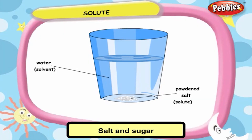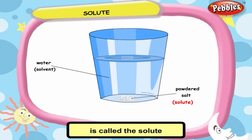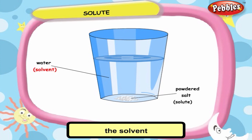Salt and sugar, which gets dissolved in water, is called the solute. Water, which dissolves substances, is called the solvent.